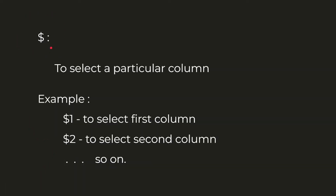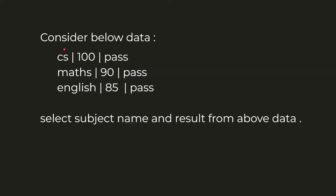The dollar symbol is used to select a particular column. For example, $1 is used to select the first column, $2 is used to select the second column, and so on. Consider this data — here we have three fields: subject name, subject marks, and result — that is, three columns.